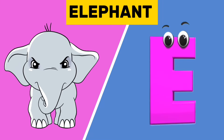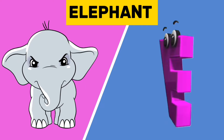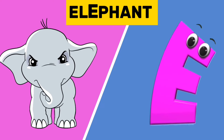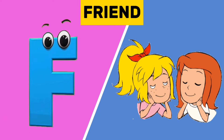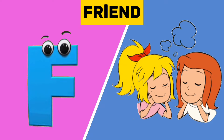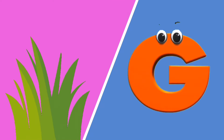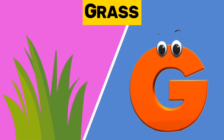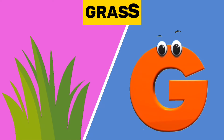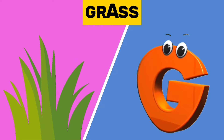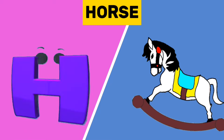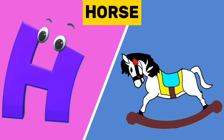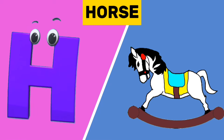E is for elephant. E, e, elephant. F is for friend. F, f, friend. G is for grass. G, g, grass. H is for horse. H, h, horse.